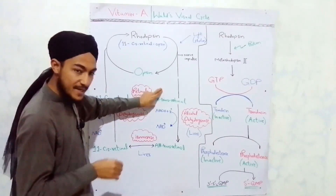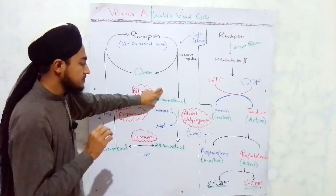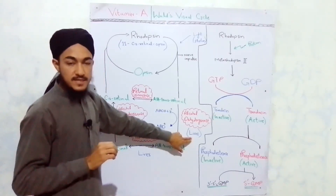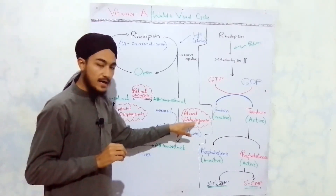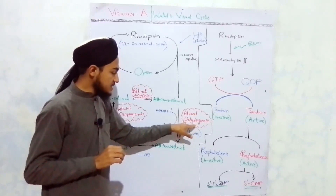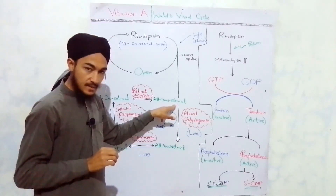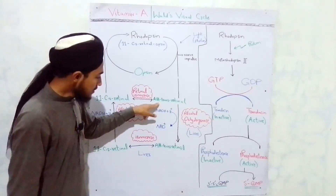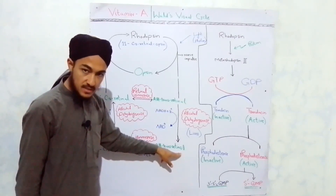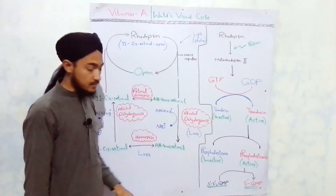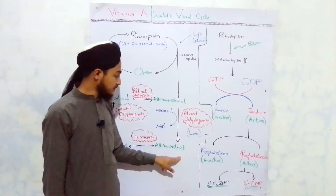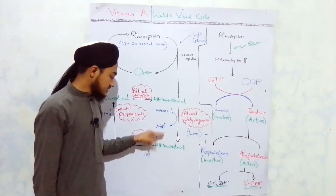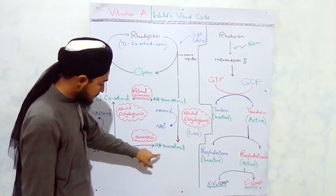The remaining all-trans retinal is transported to the liver. In the liver, the enzyme alcohol dehydrogenase catalyzes the conversion of all-trans retinal into all-trans retinol, which is the alcoholic form of vitamin A. In this reaction, NADH is converted into NAD+.